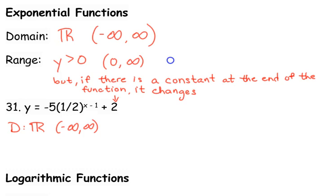If we look at the exponent, that minus 1 is shifting it right one unit. Well, that doesn't affect our range. That's just moving it left and right. What does that negative 5 in front do, though? The negative 5 is going to take all of our values and multiply them by negative 5. So instead of everything being positive, one-half to any power is going to be a positive number. However, if we take that answer and then multiply it by negative 5, all those are going to become negative values.